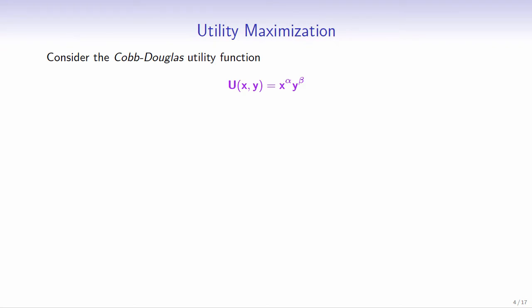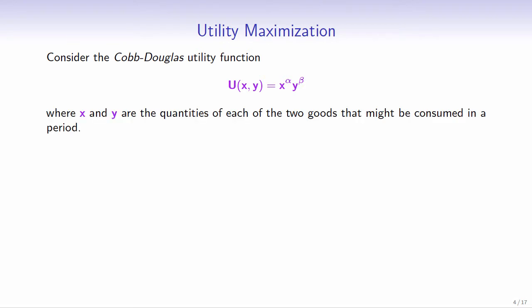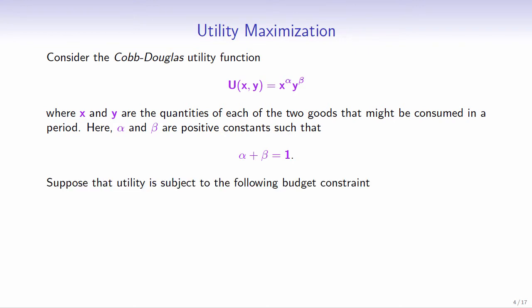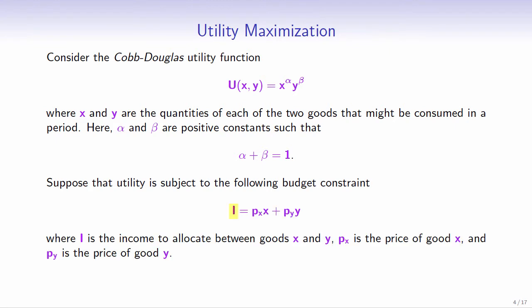Consider the Cobb-Douglas utility function u of x and y, which equals x to the power of alpha times y to the power of beta, where x and y are the quantities of each of the two goods consumed in a period. Here alpha and beta are positive constants such that alpha plus beta equals 1. Suppose that utility is subject to the budget constraint: income equals the price of good x times x plus the price of good y times y. Our goal is to maximize utility.